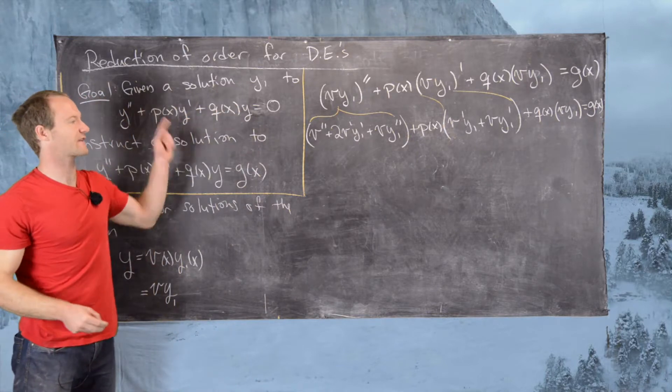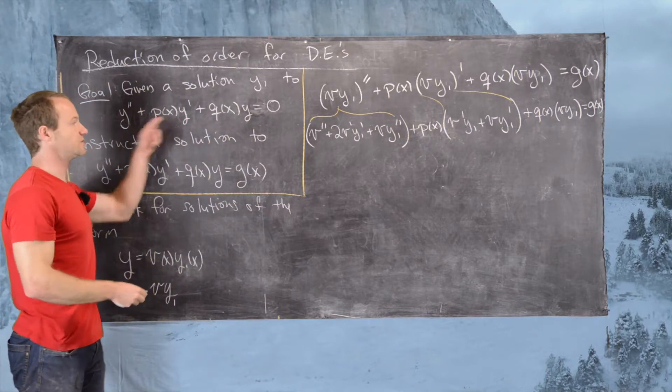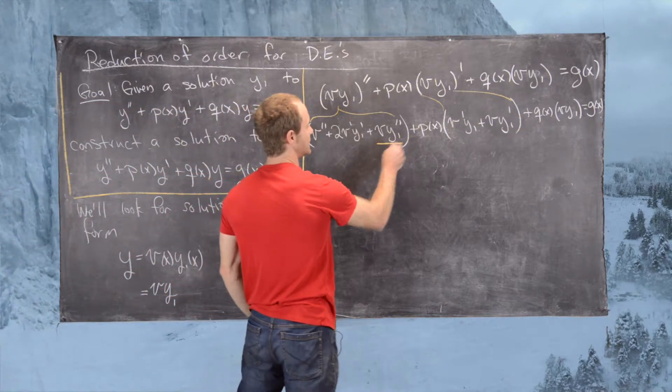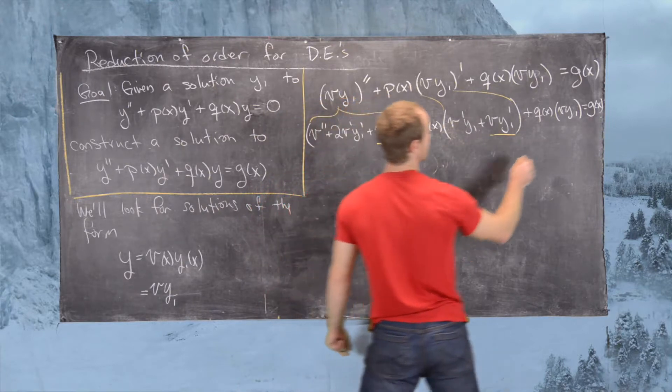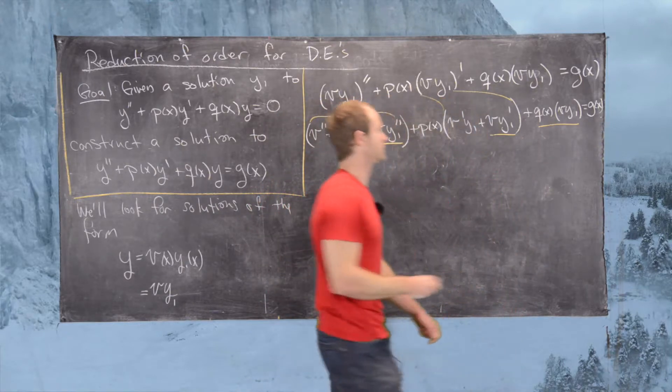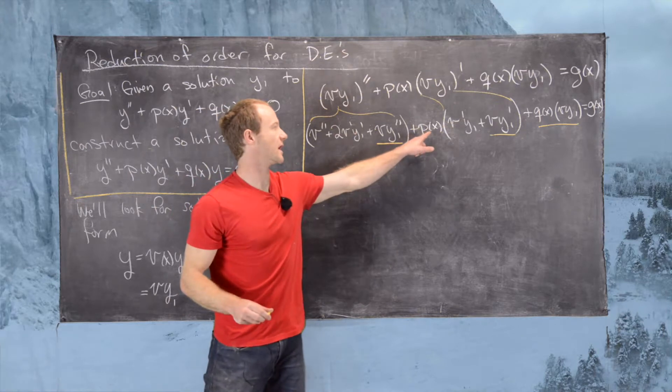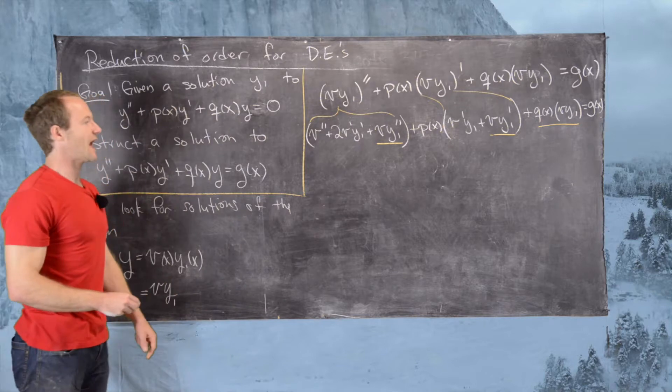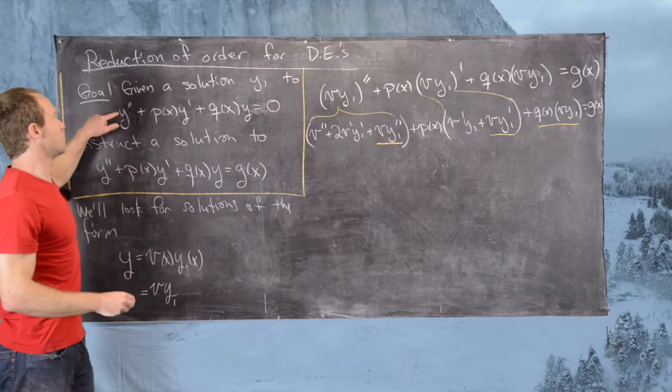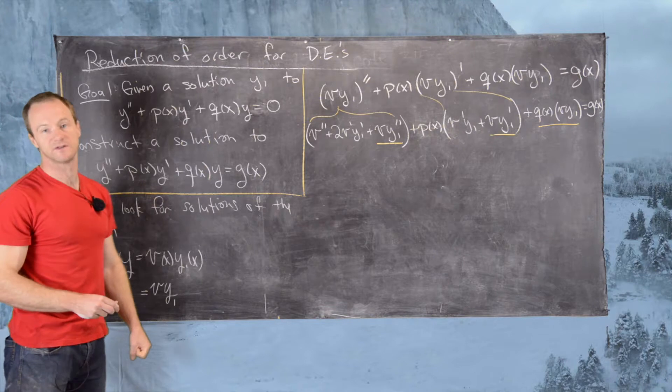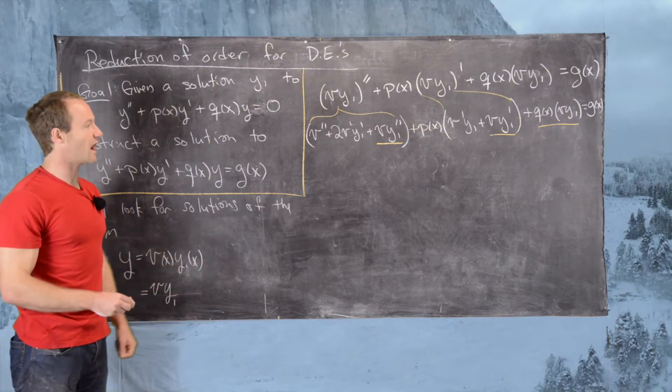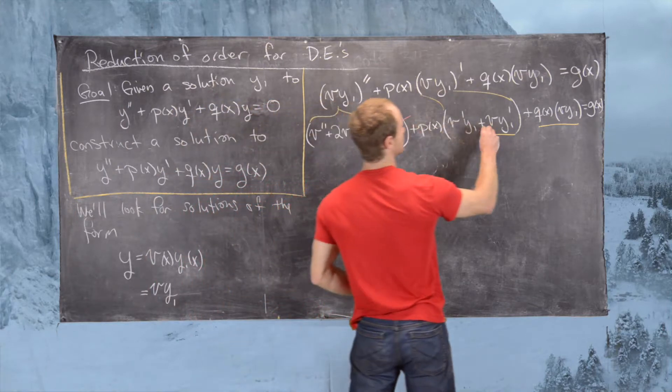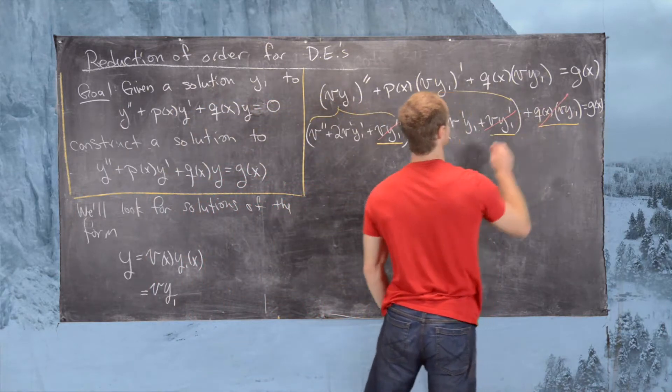Now we want to apply the fact that y1 is a solution to this corresponding homogeneous differential equation. Let's notice that if we take these terms that are underlined in yellow and do the appropriate distribution of p(x) onto them, that is equal to this homogeneous differential equation multiplied by the function v. But since y1 is a solution to that homogeneous differential equation, we know all of these terms will help each other cancel out to zero.